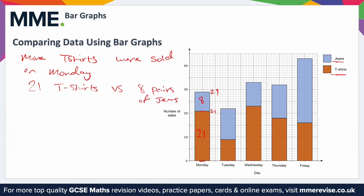For most of the days, you can see straight away which one represents more sales. Looking at Tuesday, the blue section is clearly bigger, so more jeans were sold. Looking at Wednesday, the orangey brown t-shirt section is clearly a lot bigger than the blue jeans section, so more t-shirts were sold that day. Thursday is not as obvious, but reading off the scale you can work out that more t-shirts were sold. And on the final day, the jeans bar is significantly larger than the t-shirt section, so more jeans were sold that day.